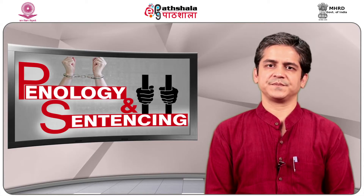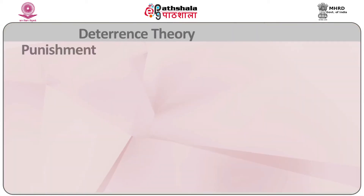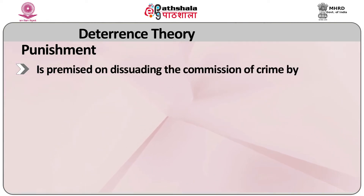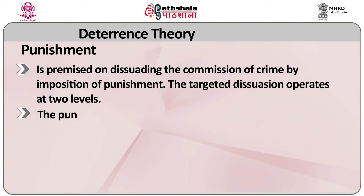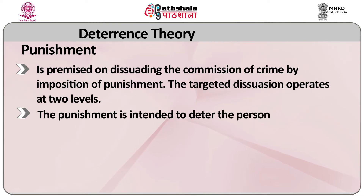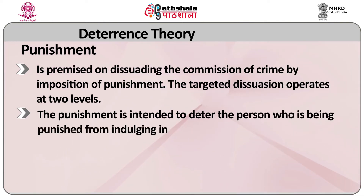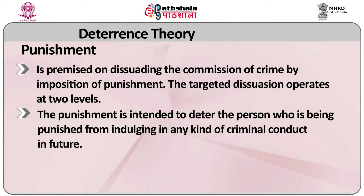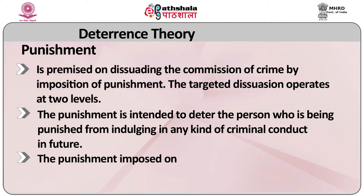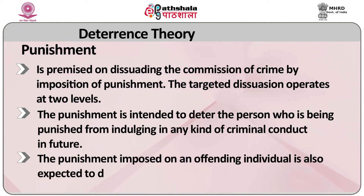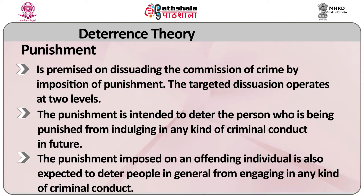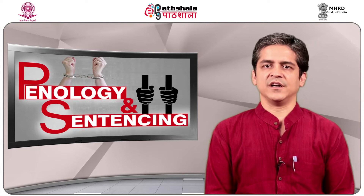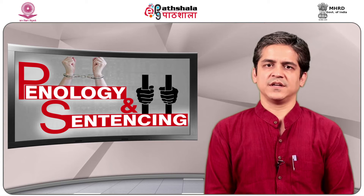The deterrence theory of punishment is premised on dissuading the commission of crime by imposition of punishment. The targeted dissuasion operates at two levels. Firstly, the punishment is intended to deter the person who is being punished from indulging in any kind of criminal conduct in future. Secondly, the punishment imposed on an offending individual is also expected to deter other people in general from engaging in any kind of criminal conduct. This theory is founded on creating the fear of punishment as the modality to discourage people from engaging in criminal conduct.